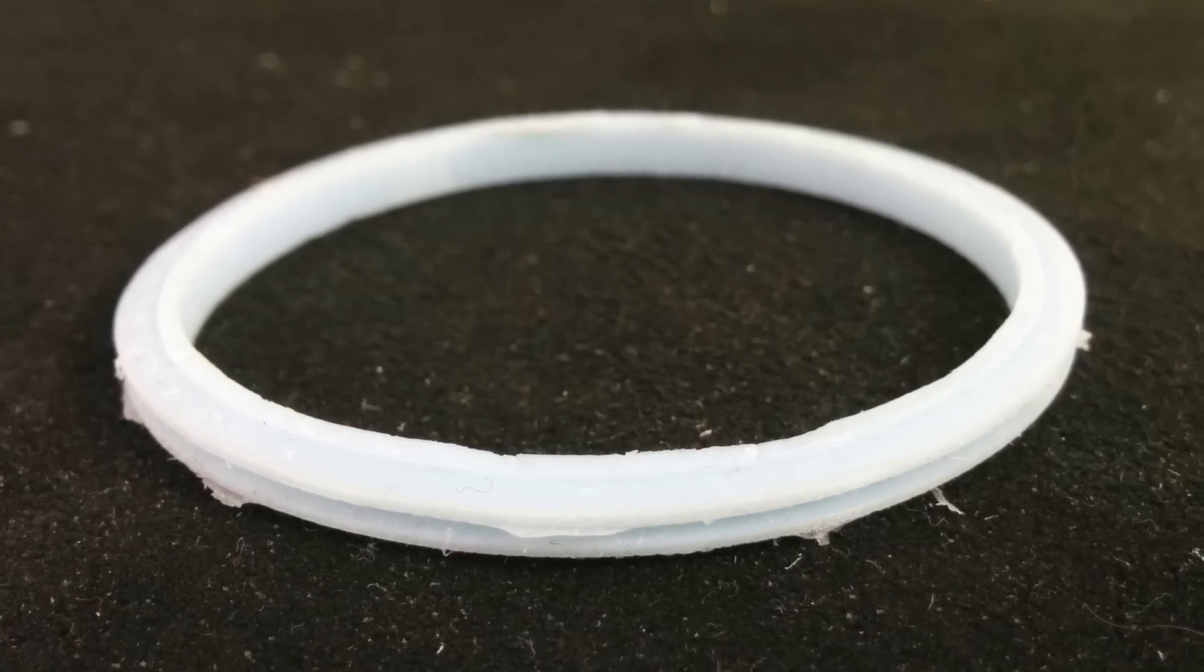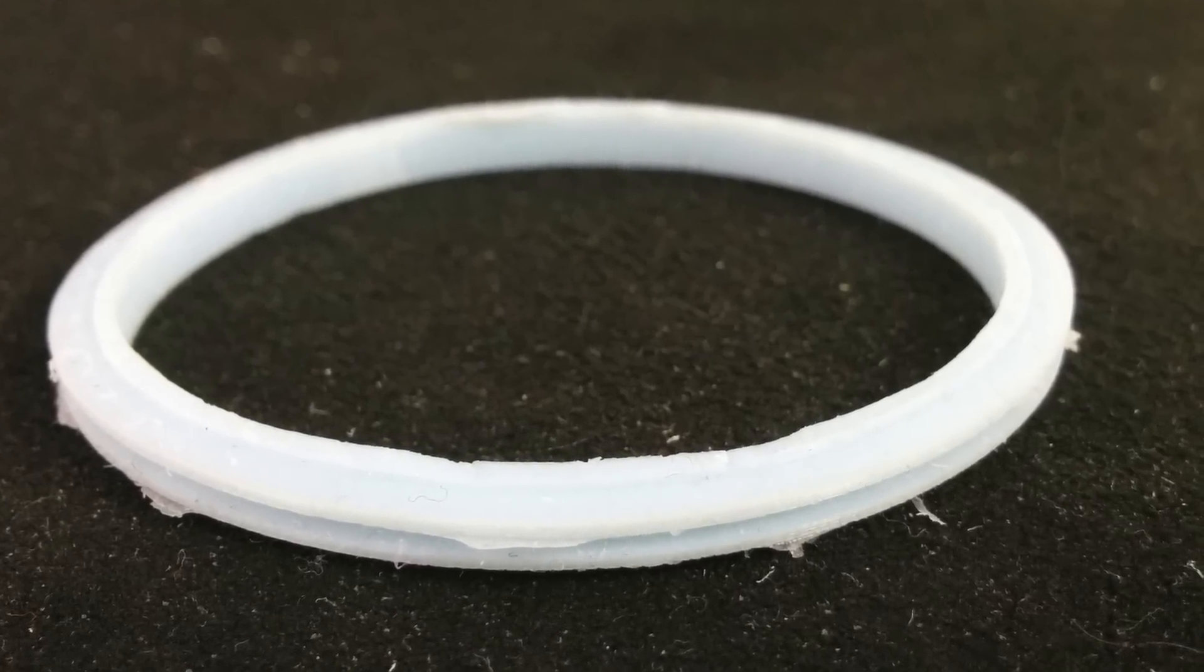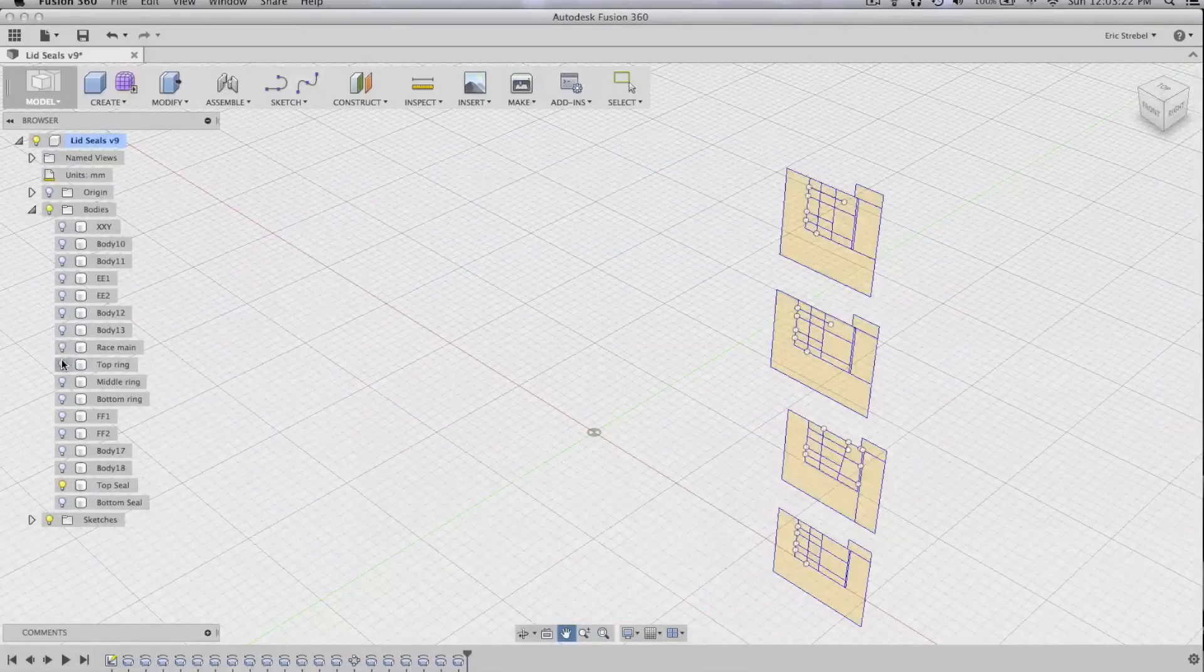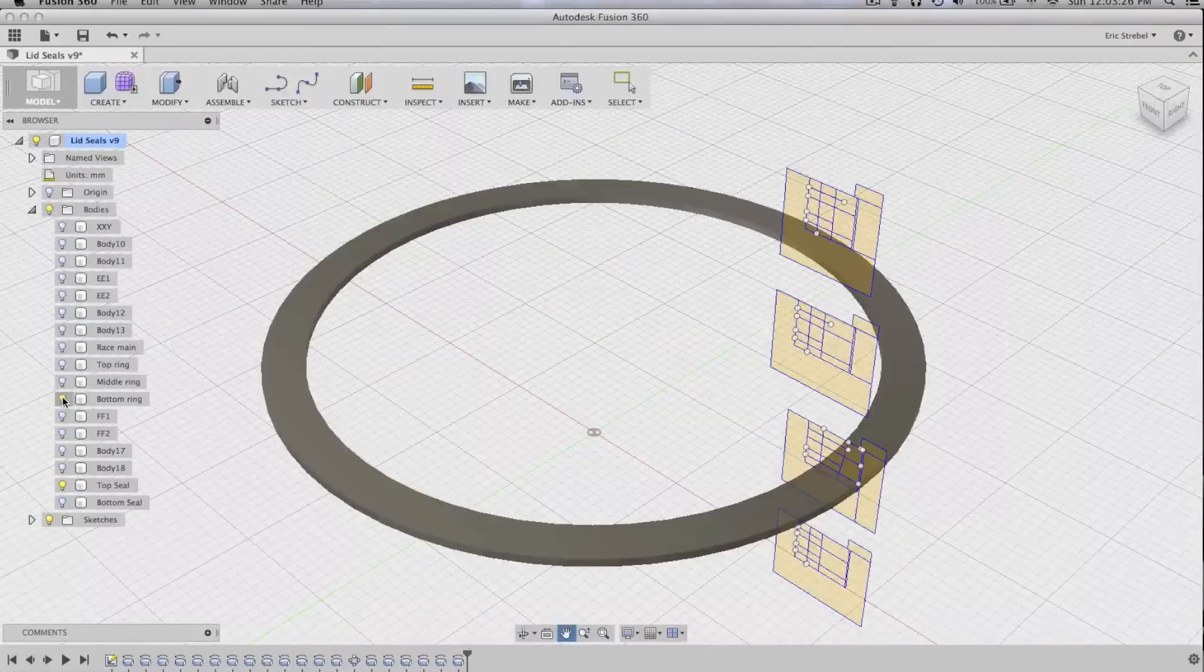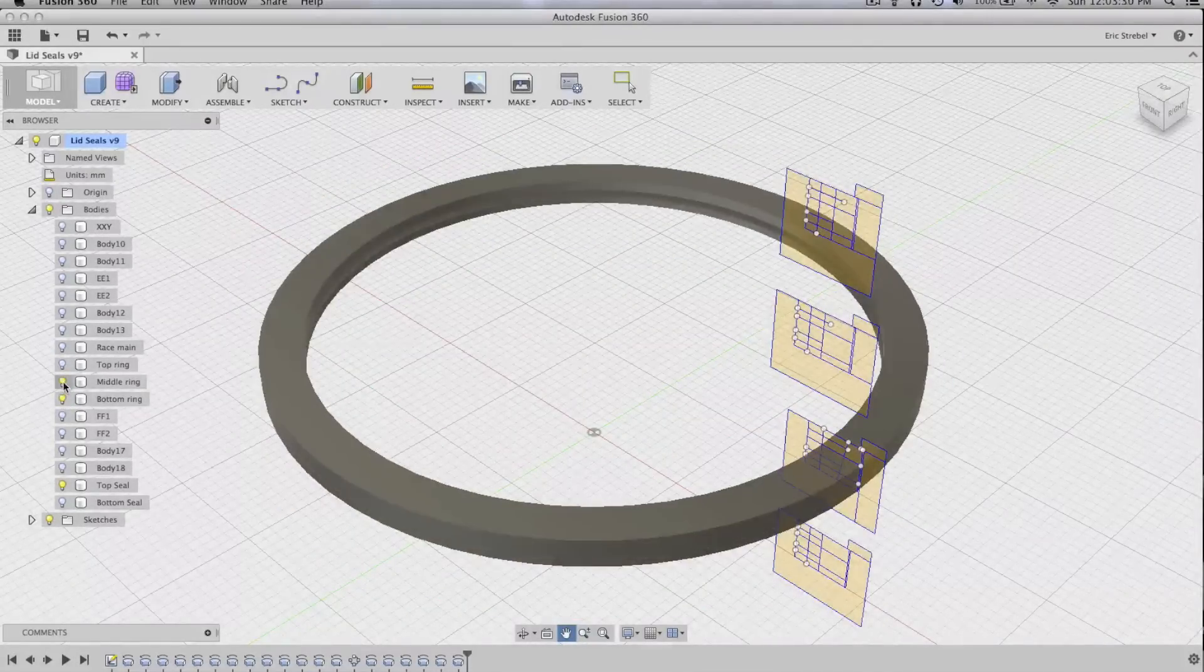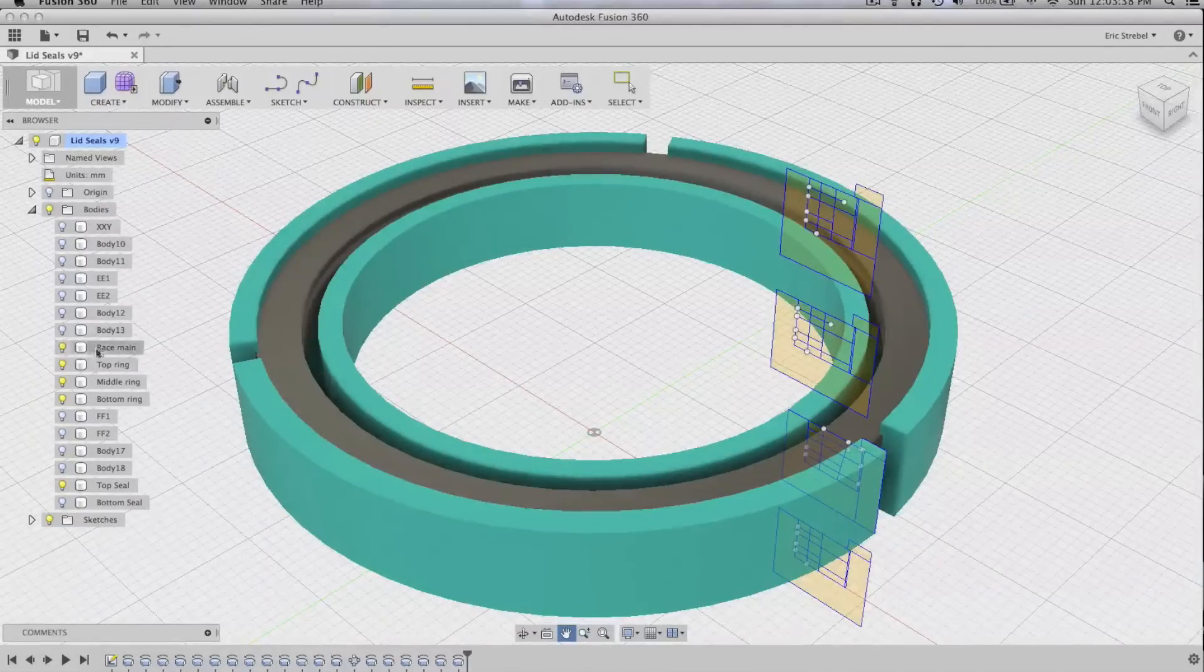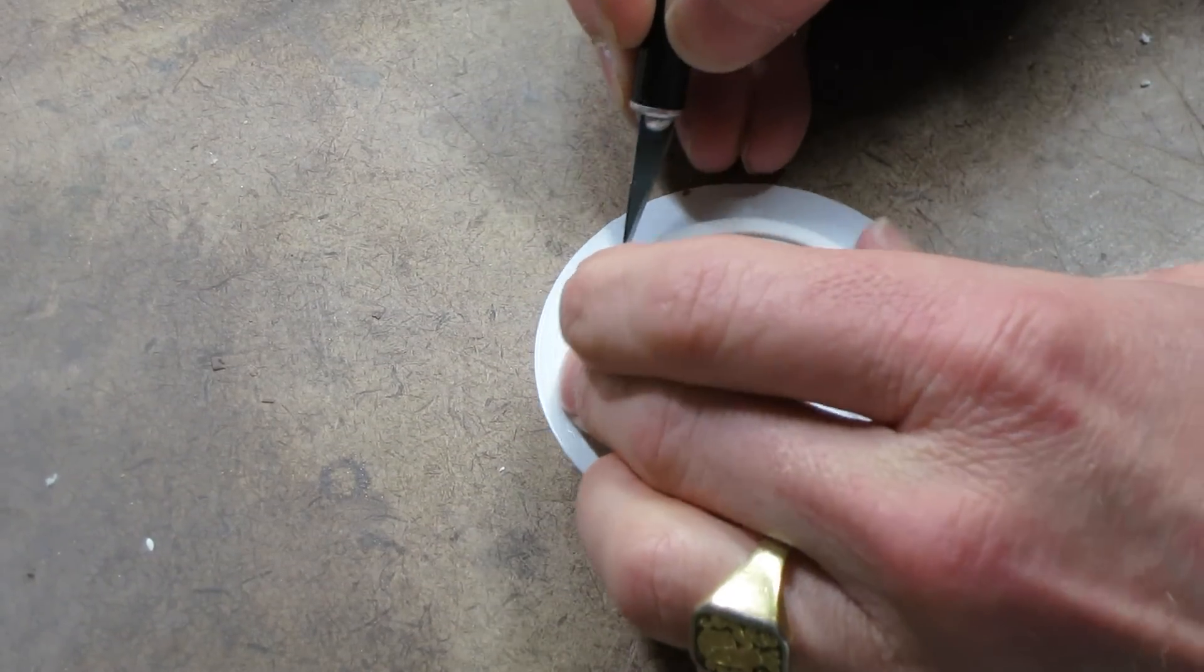I needed to create a gasket out of silicone for a project that I was working on. I was talking with the technical manager at Innovative Polymers about the right silicone to use and what might be a good way to go about making these gaskets. He suggested 3D printing the molds.